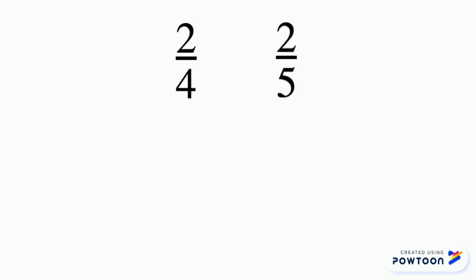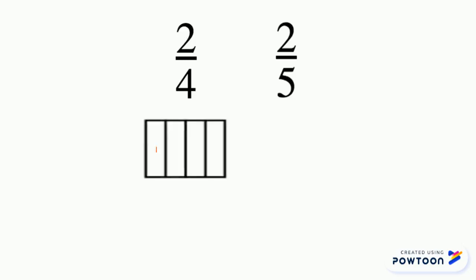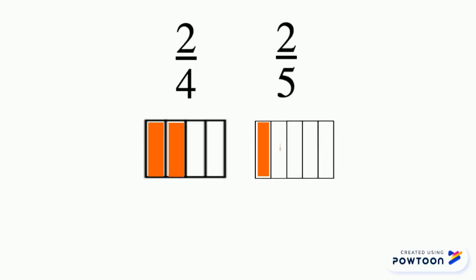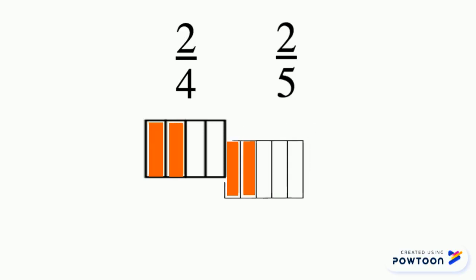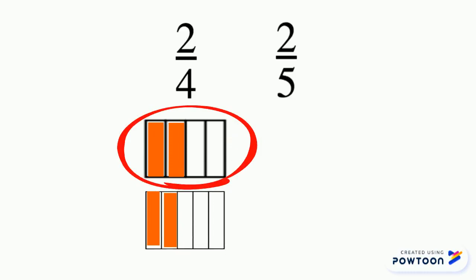Let's look at another example to compare two fractions with the same numerator but different denominators. Here we have two fourths and two fifths. When comparing fractions with the same numerator, we ask ourselves: which one has the smaller denominator? We see that two fourths has the smaller denominator, so two fourths is bigger. Let's look at the visual models to prove that it's bigger. Notice when comparing fractions, you must use the same size fraction model to compare. We see that two fourths is bigger than two fifths because its unit fractions are bigger. So we write our symbol showing that two fourths is greater than two fifths.